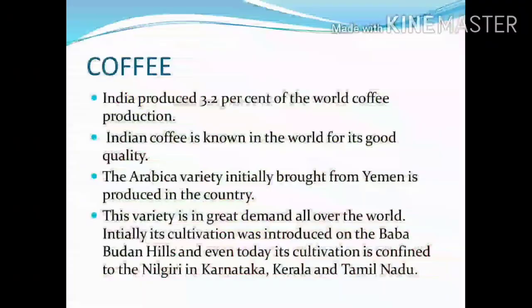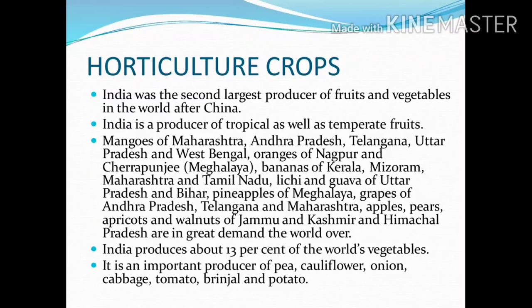Horticulture crops: India is the second largest producer of fruits and vegetables in the world after China. India is a producer of tropical as well as temperate fruits. Mango of Maharashtra, Andhra Pradesh, Telangana, Uttar Pradesh, and West Bengal; oranges of Nagpur and Cherrapunji; bananas of Kerala, Mizoram, Maharashtra, and Tamil Nadu; lychee and guava of Uttar Pradesh and Bihar; pineapples of Meghalaya; grapes of Andhra Pradesh, Telangana, and Maharashtra; apples, pears, apricots, and walnuts of Jammu and Kashmir and Himachal Pradesh are in great demand worldwide.